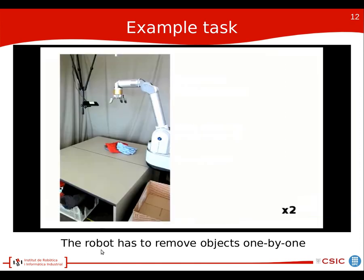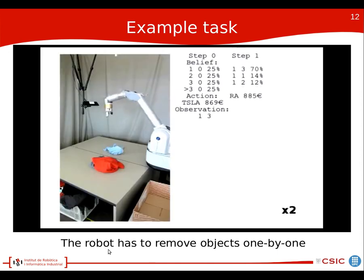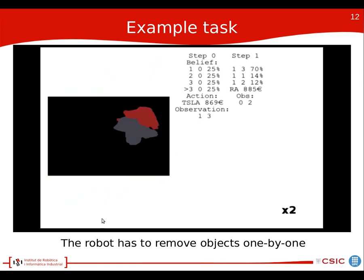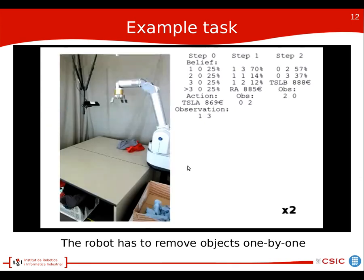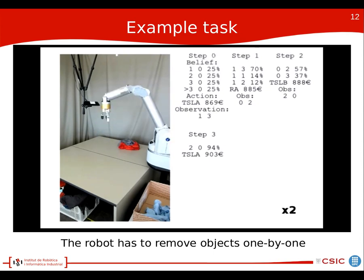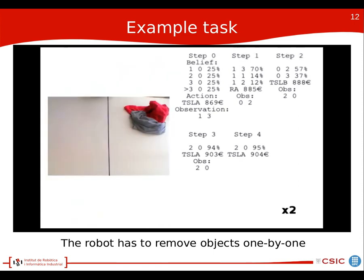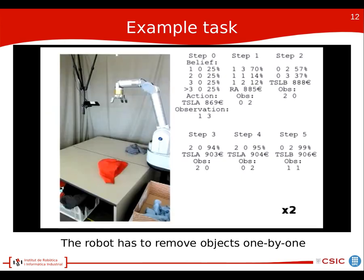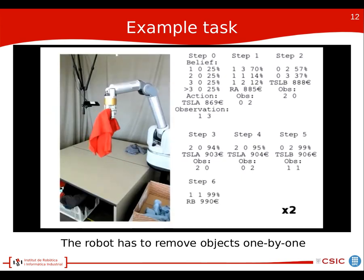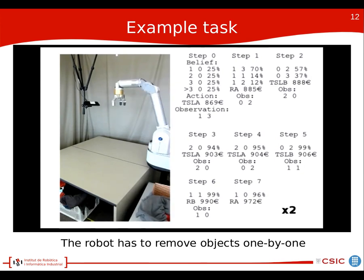Here is a video of a sample execution. We can see the robot separating the pieces of clothing, having errors on perception — for example, perceiving three objects on the right-hand side when there were actually two. Also, when the robot fails to grasp, which doesn't change the state, the system is robust. Since perception uncertainty and manipulation errors are encoded in the policy, the system can adapt to these errors and successfully complete the task, minimizing failures.